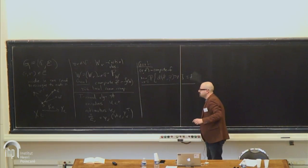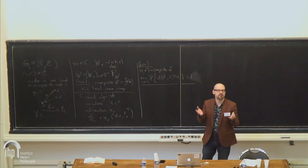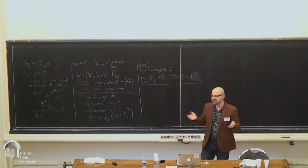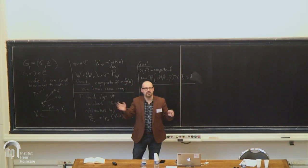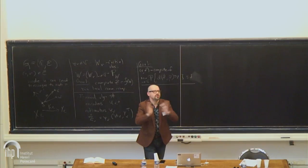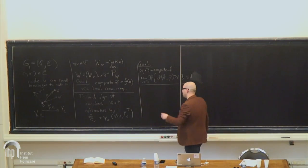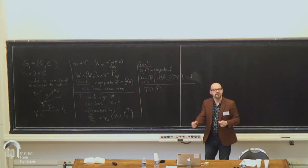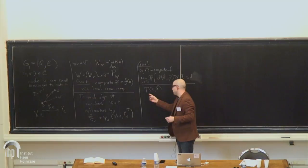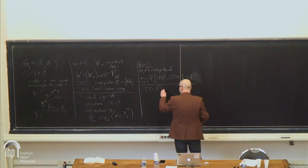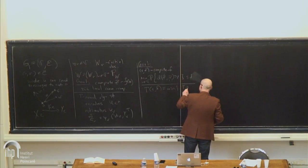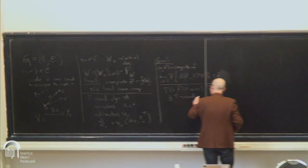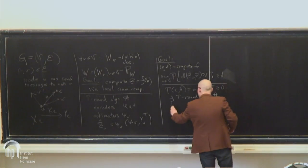This is different from the usual communication complexity where the currency is bits. Here the alphabets may be different, and at each round each node only sends one symbol to each of its neighbors from their corresponding alphabet. I'm interested in the number of rounds. So I define T(ε,δ) as the minimum number of rounds such that there exists a T-round algorithm A that ε-δ computes F.